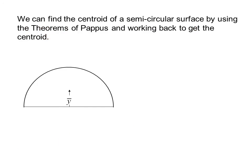We can find the centroid of a semicircular surface by using the theorems of Pappus and working back to get the centroid. The area of this surface is one-half πr², since it is half a circle. If we revolved it around the horizontal straight edge, we'd get a sphere, and the volume would be four-thirds πr³.